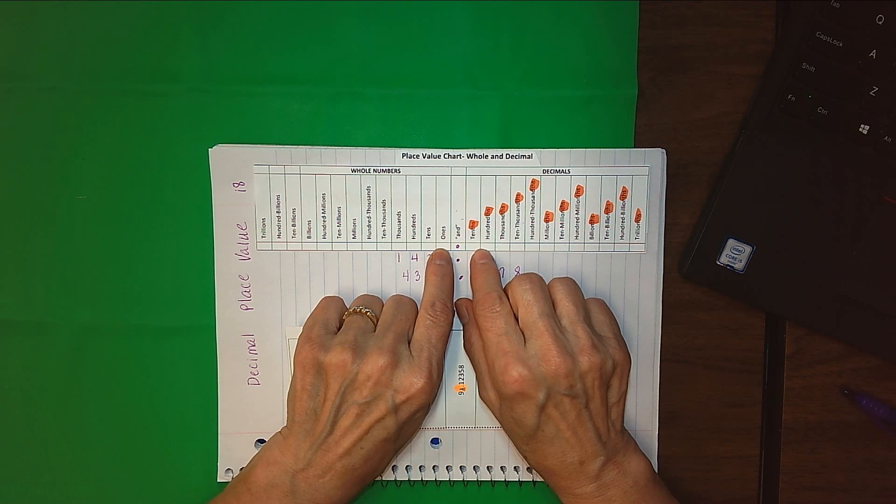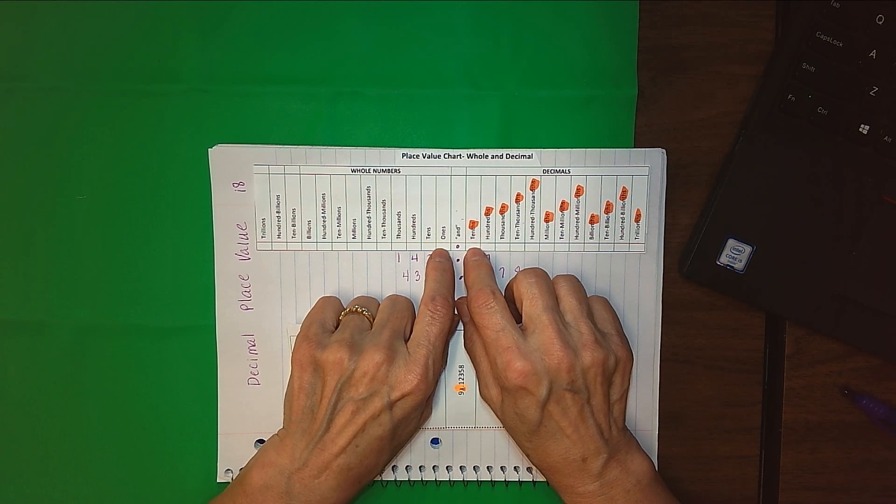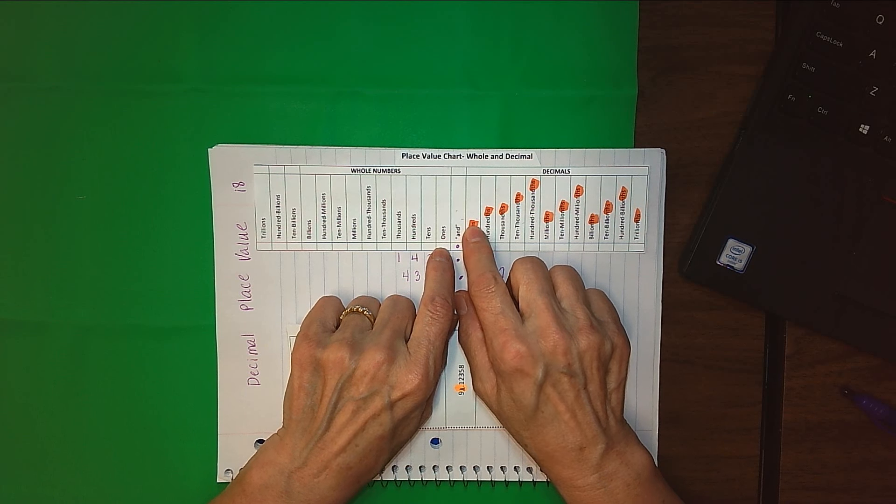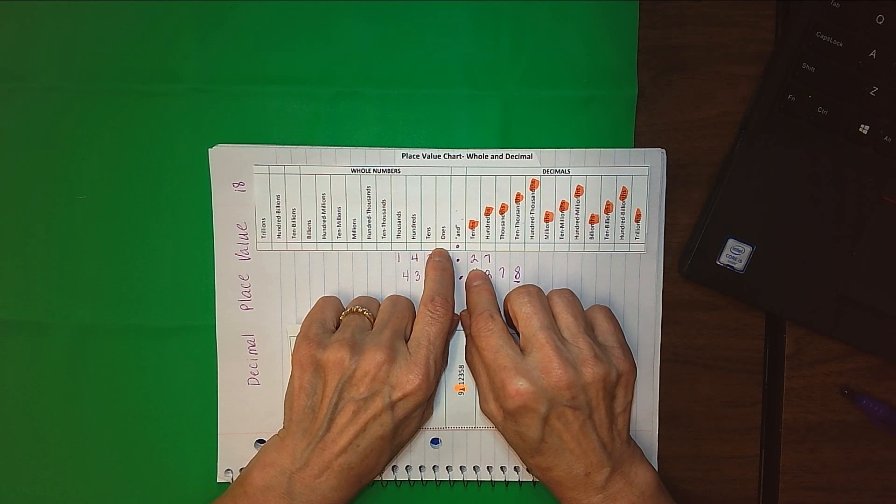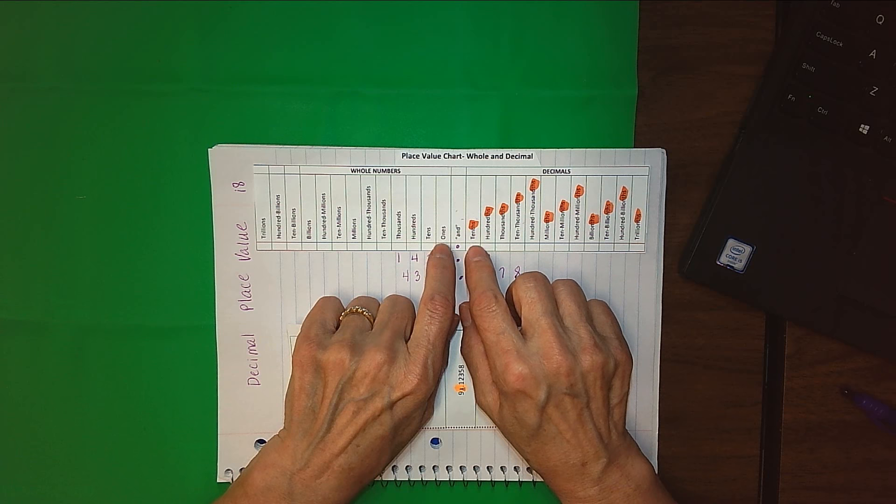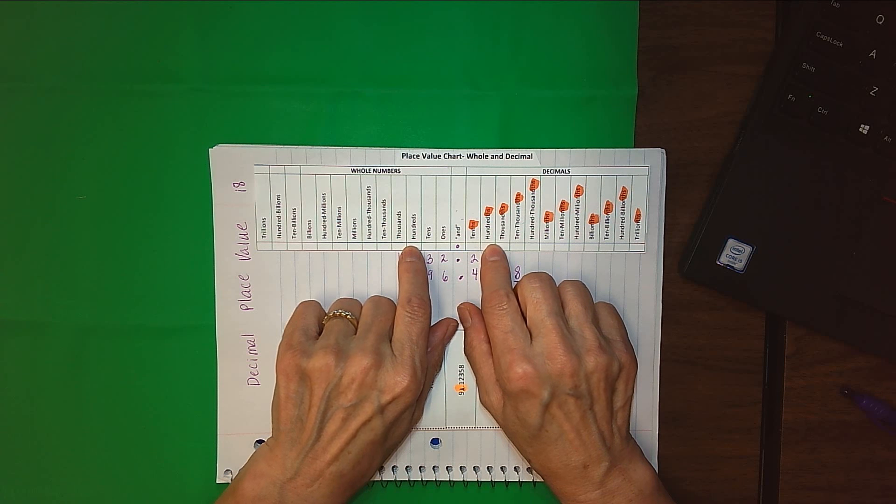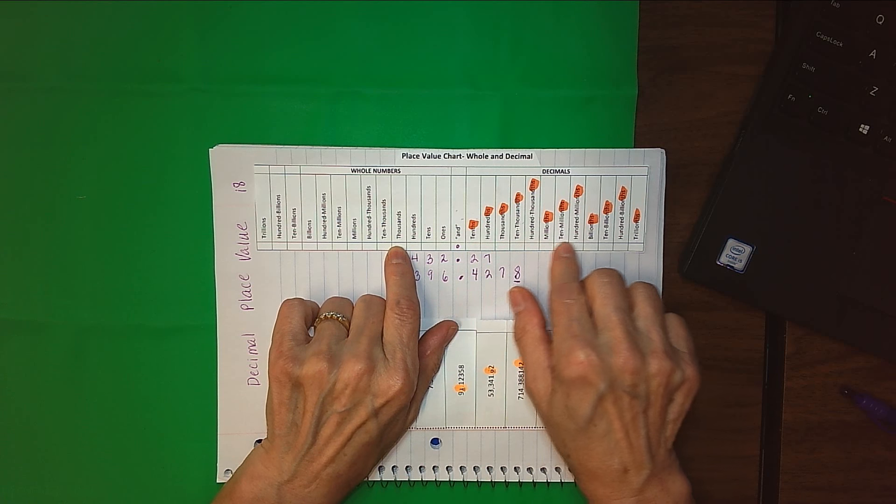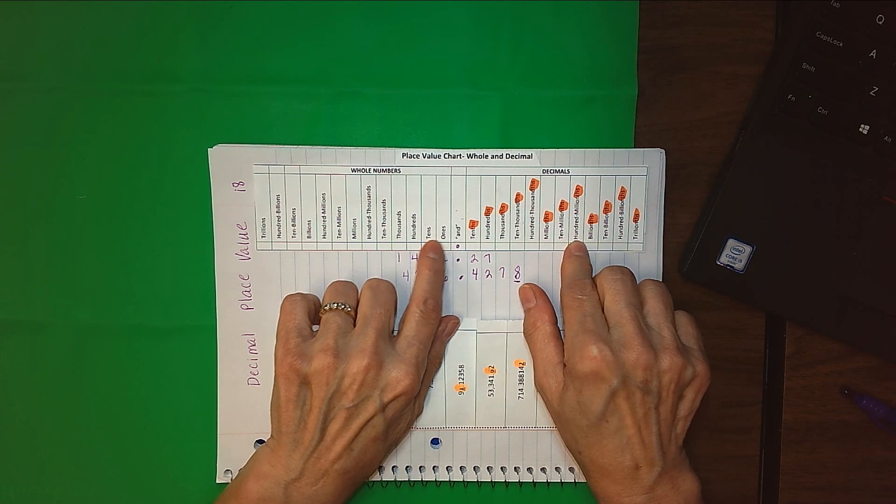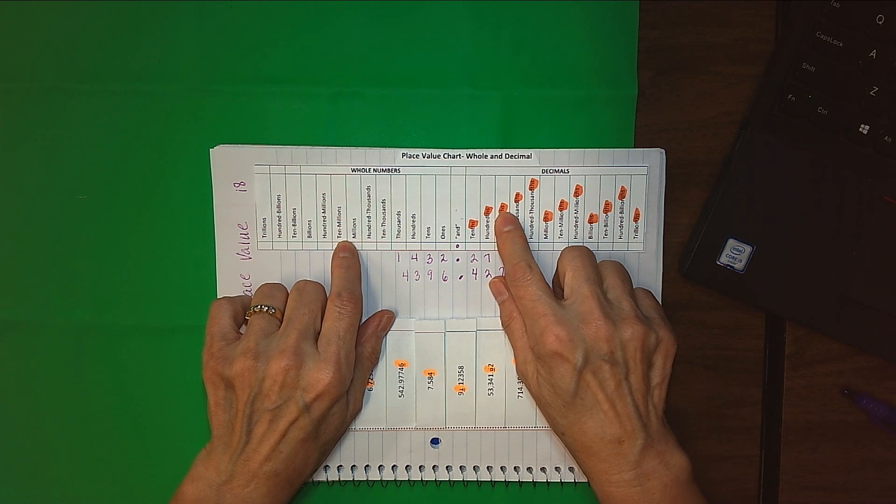Then we start with, instead of ten, it's tenths. Kind of sounds like you can't talk correctly when you try to add that th at the end of it. We know that when we add that th at the end, we're talking about a decimal place value. But it goes tens, tenths, hundreds, hundredths, thousands, thousandths. This follows the same pattern as the whole numbers on the other side of the decimal point. We just add that th at the end of it.